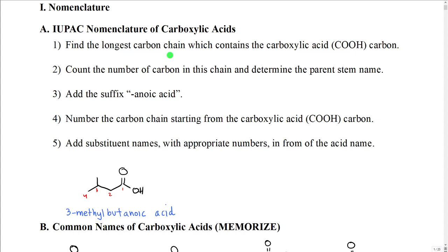If we were to summarize this for just the carboxylic acid, we would find the longest carbon chain which contains the carboxylic acid. We would count the number of carbons in this chain and determine the parent stem name. We would determine any unsaturations and put those in, and then we would add the suffix '-oic acid'. We would number the carbon chain from the carboxylic acid and then add substituent names with appropriate numbers.